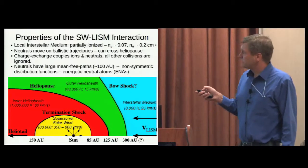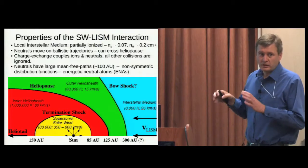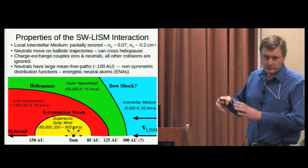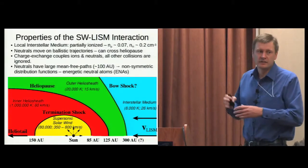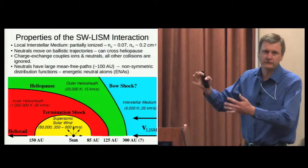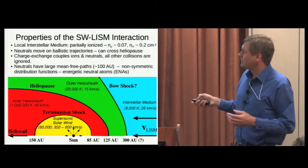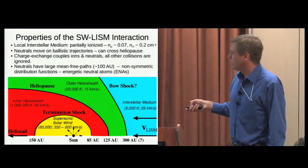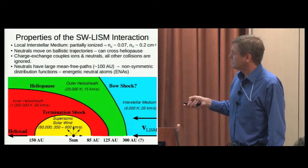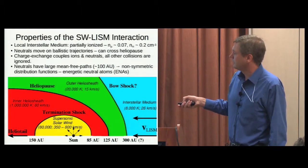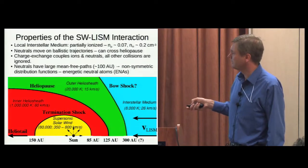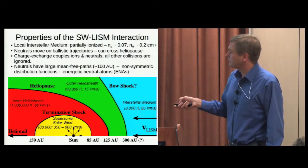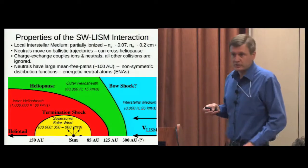What makes this problem interesting is that the coupling scales are of similar size to this domain. If the coupling was very tight, you might say the plasma and neutrals just flow together — that's easy. Or if it was very weak, there's not much coupling. But in fact, the coupling is on these intermediate scales. So some of the neutrals will charge exchange out in the LISM and pick up new trajectories, but about half of the neutrals just cross the heliopause and enter into the solar wind region where they also undergo charge exchange.